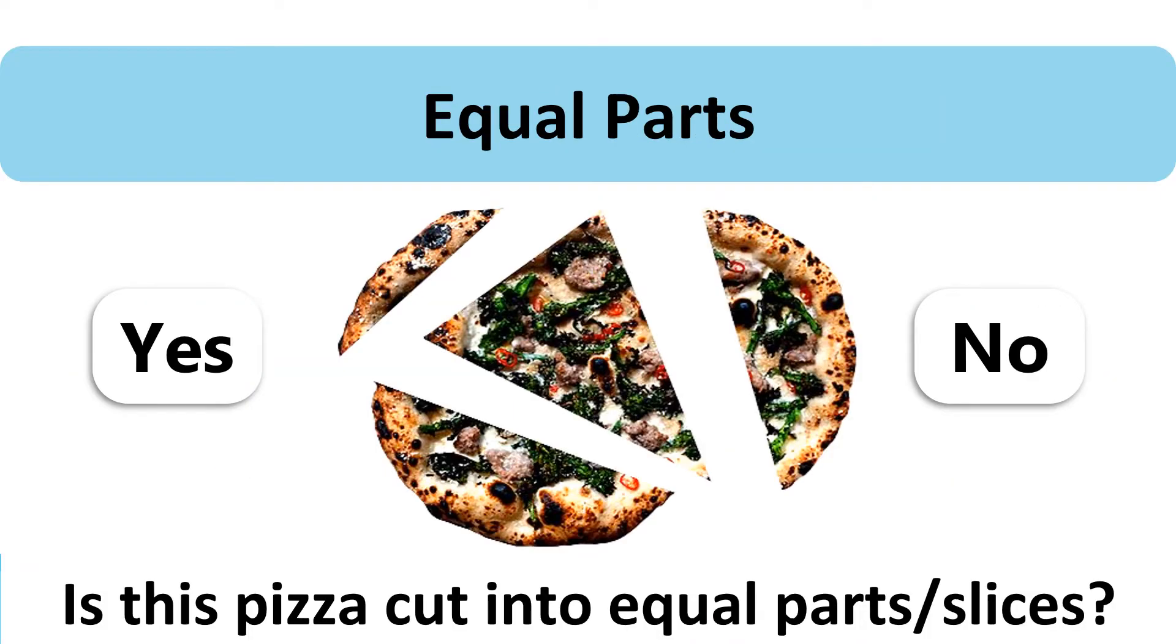Now let's have a look at this pizza. Is it cut into equal parts or slices? The answer is no. Why is it no? Because you can clearly see that whoever gets this piece will have more than the one who gets this much. At least this person has some meat and vegetables on their slice, but this person would only have the crust of the pizza. So it is not equal. It's a no.